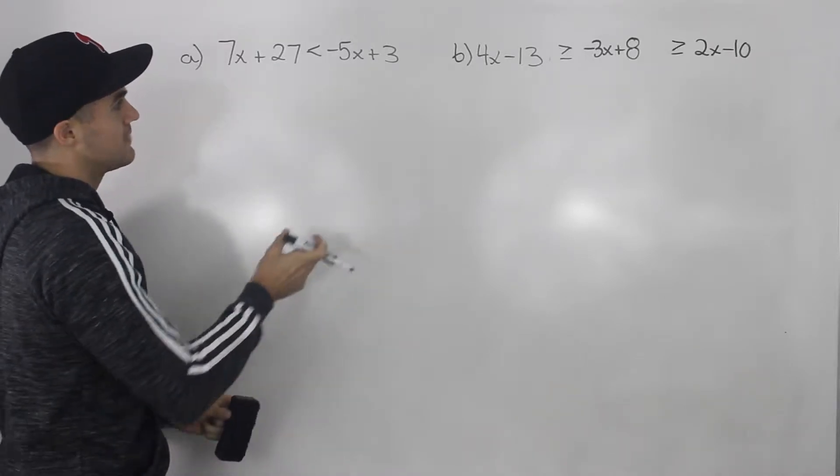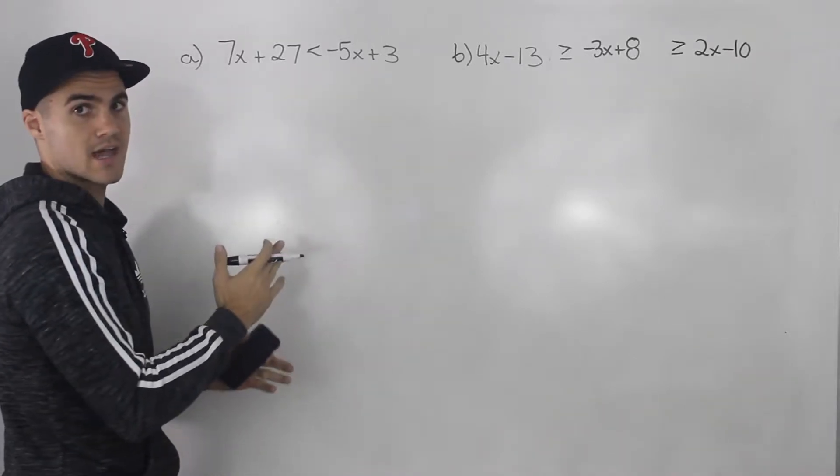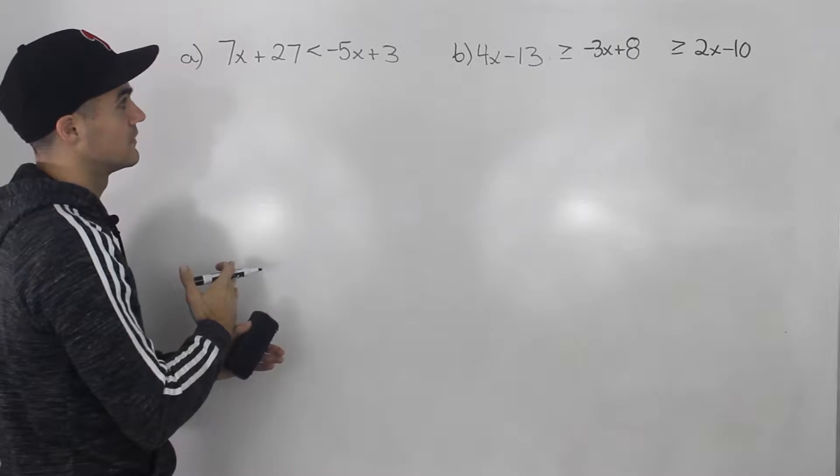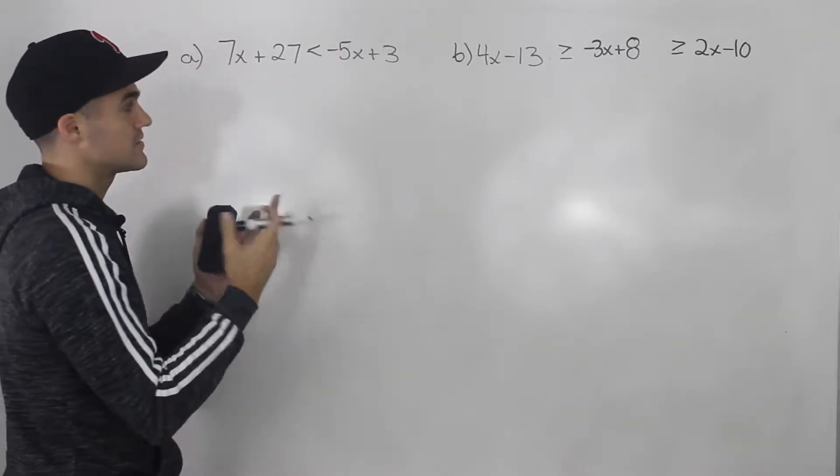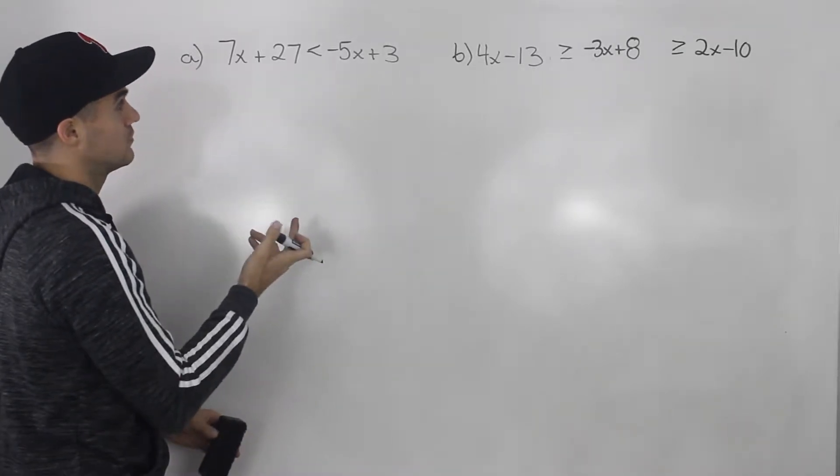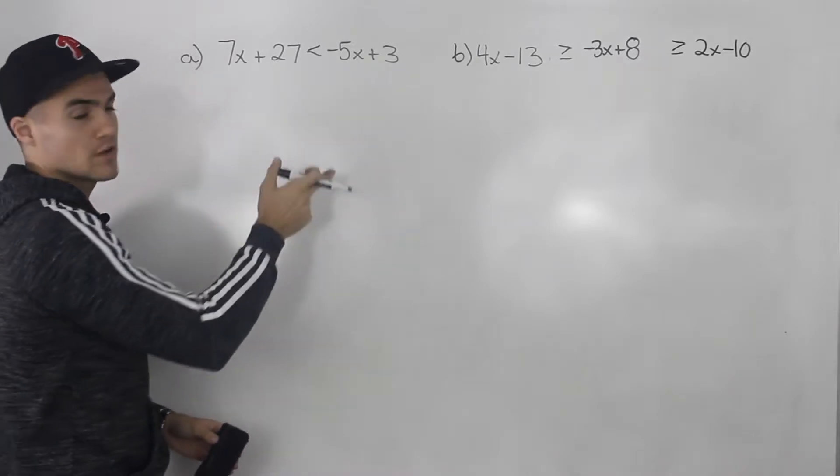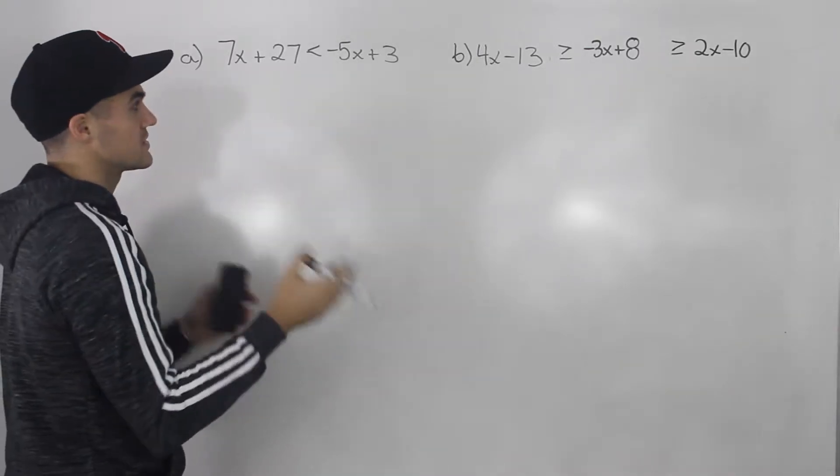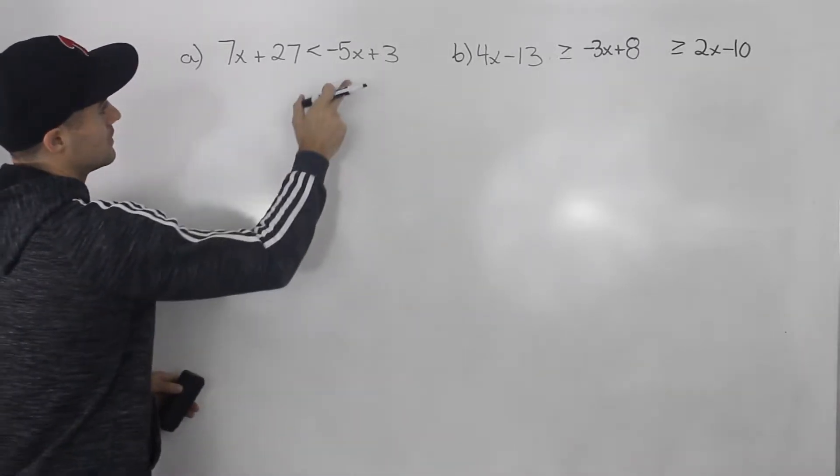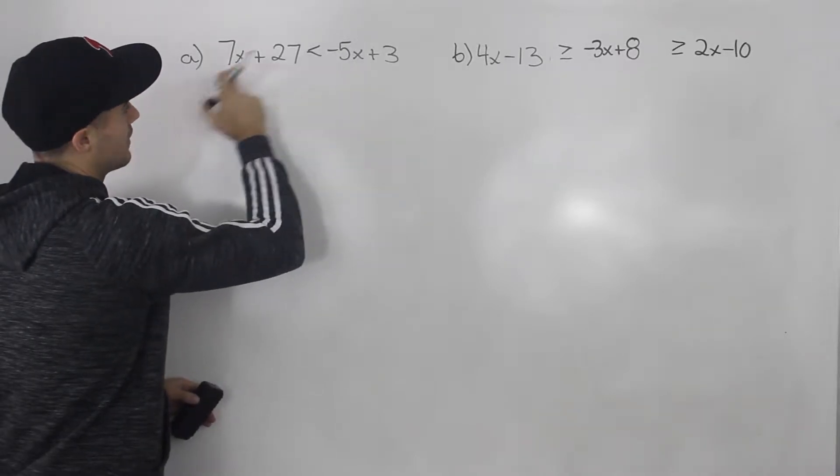However, with inequalities, in my opinion, it's best to bring all the x's to the side where they'll be positive, where the simplified leading coefficient will be positive. Because then if you have to divide by negative, you have to worry about switching the sign. So in this case, I would bring this negative 5x over.